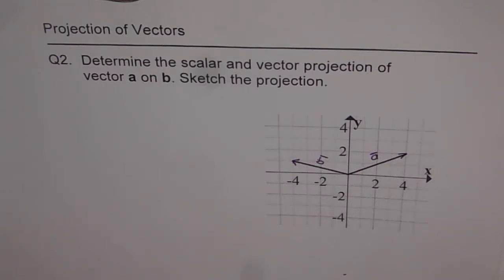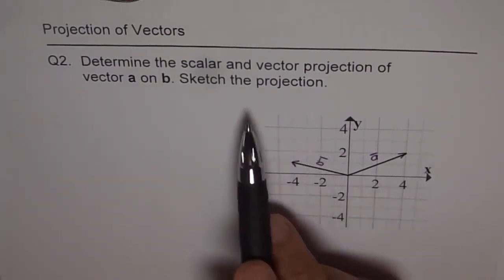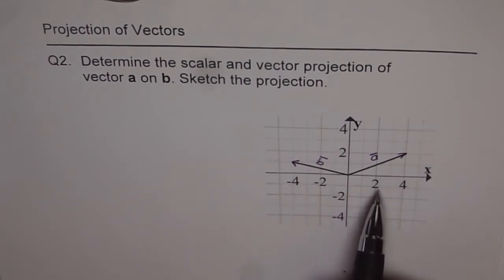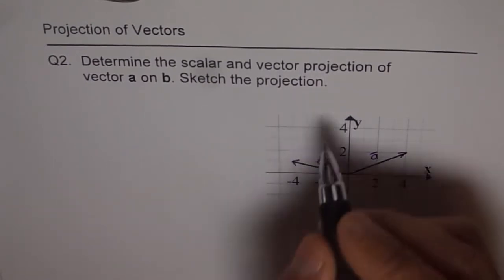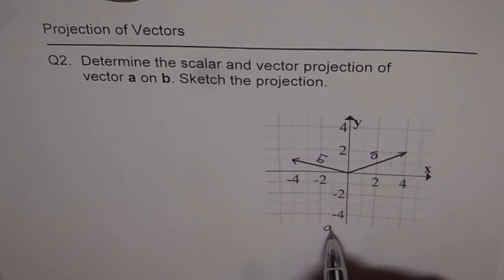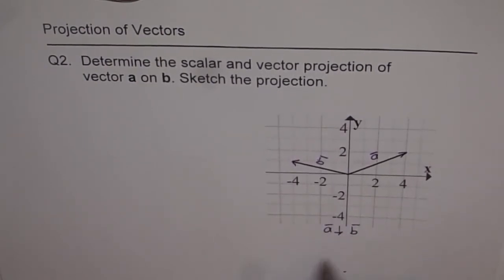But I'll take this moment to tell you something about it, and that is how to draw the projection from A to B, which could be a vector projection or a scalar projection. So as we can see here, we want projection of A on vector B. This is what we want.